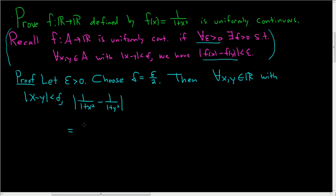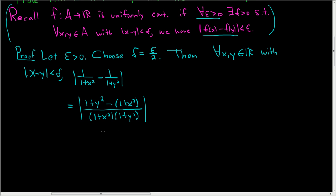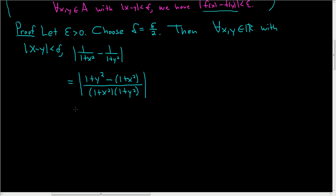The obvious thing to do here is to combine the fractions by finding an LCD. Skipping some steps, this gives us (1+y²) − (1+x²) over (1+x²)(1+y²). The 1s cancel in the numerator, so we're left with (y²−x²) over (1+x²)(1+y²). And in all of this, we still have the absolute value.